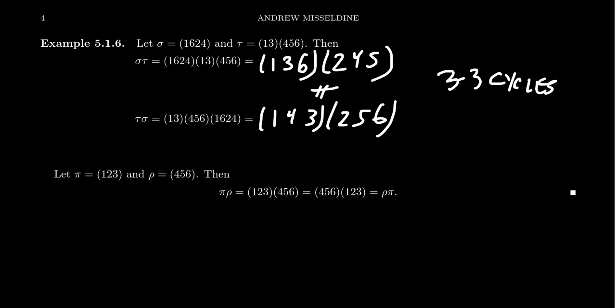Although the elements don't commute, their cycle structure is preserved even when you switch the order — something we'll come back to. Just because most permutations don't commute doesn't mean there's never commutativity. Take, for example, the permutations pi = (1 2 3) and rho = (4 5 6).